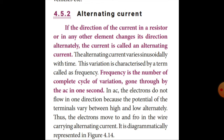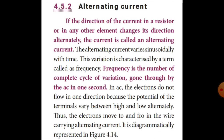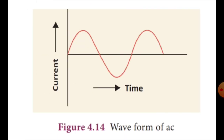The AC waveform is diagrammatically represented in figure 4.14. The sinusoidal wave represents one full wave - moving above and below the horizontal line represents one complete cycle. If you look at the sinusoidal symbol, the S-shape represents one full wave.